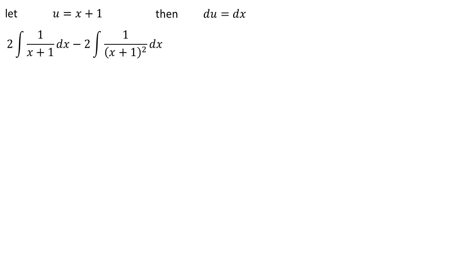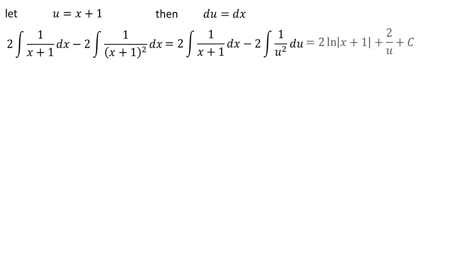So 2 times the integral of 1 over (x+1) dx minus 2 times the integral of 1 over (x+1) squared dx becomes 2 times the integral of 1 over (x+1) dx minus 2 times the integral of 1 over u squared du, which gives 2 times ln|x+1| plus 2 over u plus C.